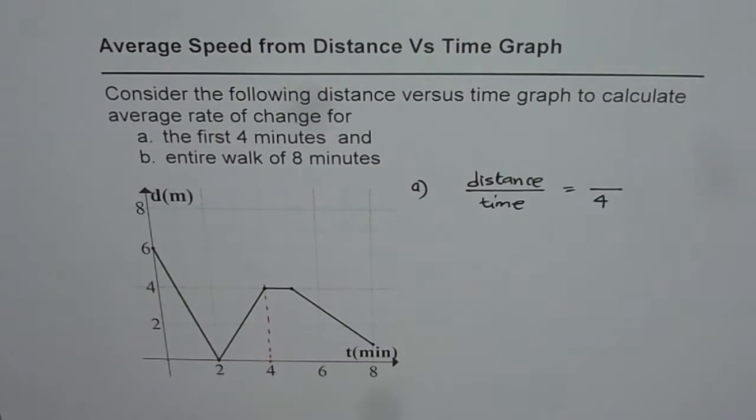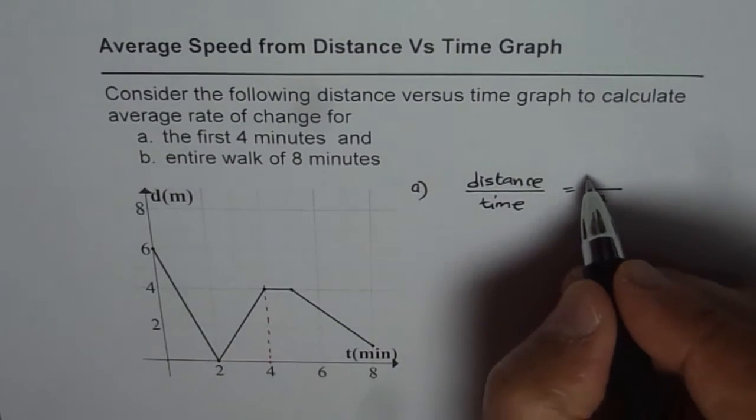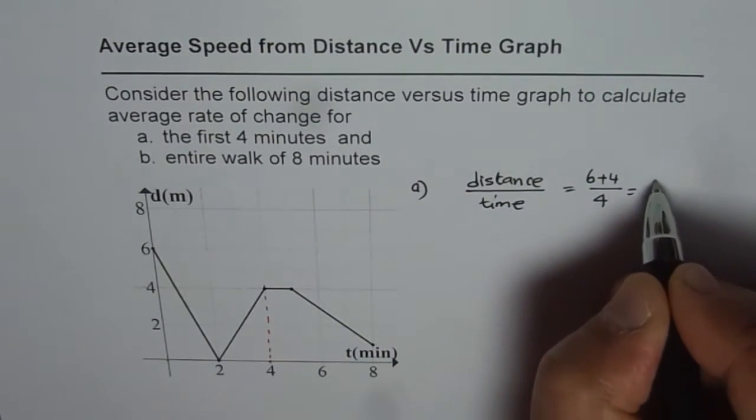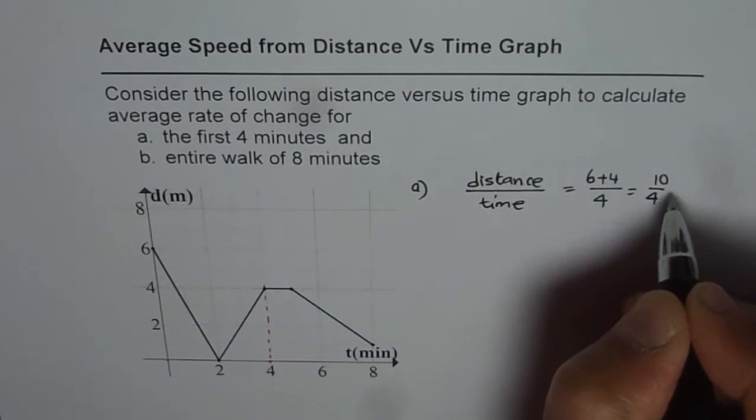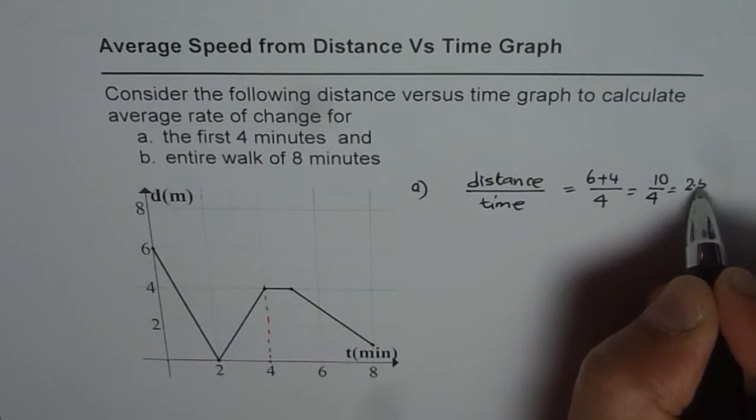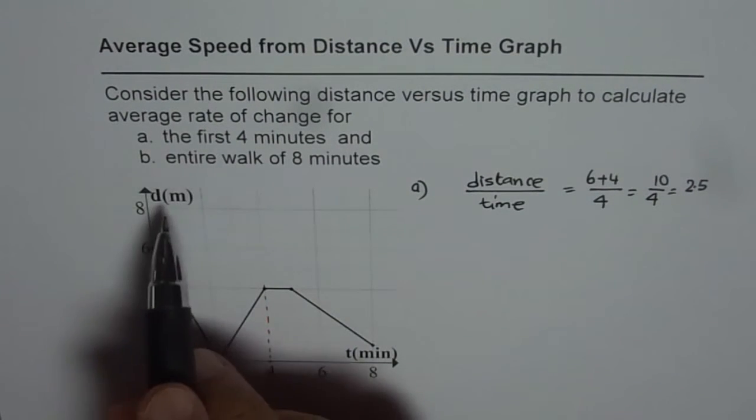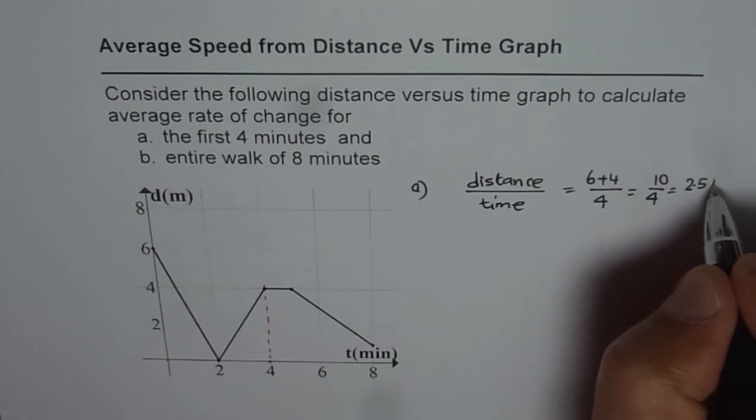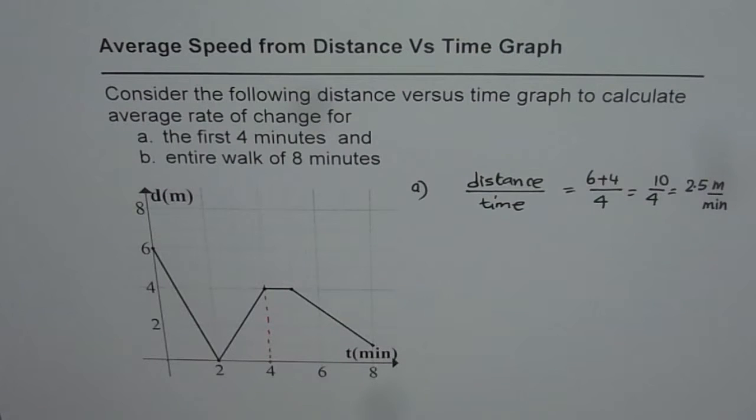And what is the distance covered? In the first 4 minutes, distance covered is from 6 to 0, then from time 2 to 4, the distance covered is 6 plus 4, which is 10. So it is 10 over 4, or 2.5 meters per minute. That is the average rate of change in the first 4 minutes.